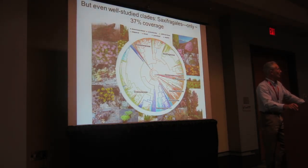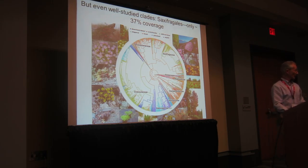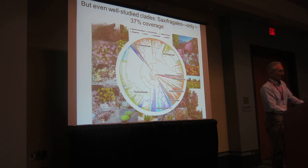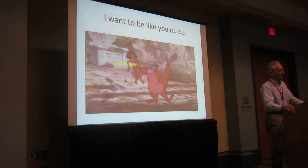Even well-studied clades — Saxifragales was pointed out as a well-studied angiosperm a few years ago — had really very poor coverage. Only 37% of the species actually had DNA data. It's much better now because of Ryan Folk's work, but this is a clade of about 2,500 species, showing that really most parts of the angiosperm tree of life are poorly understood.